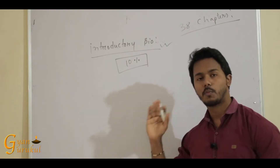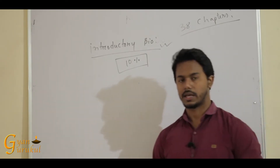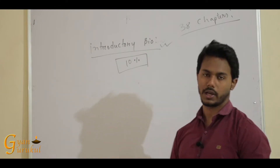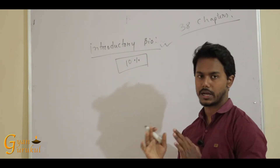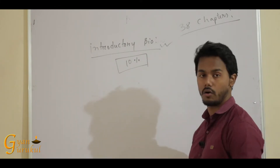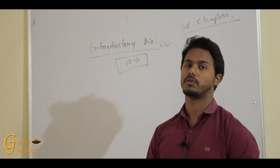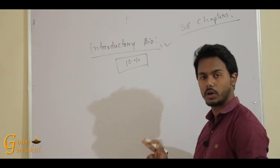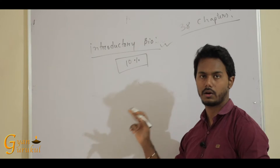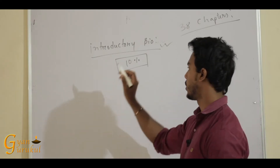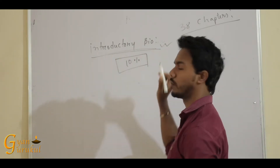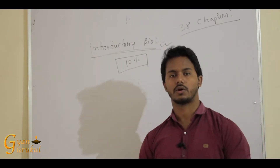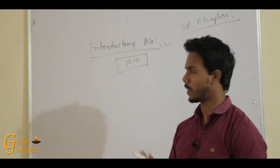This portion is quite lengthy, but it is a basic chapter. Living World, Biological Classification, Plant Kingdom, Animal Kingdom — the chapters are really long. However, the questions are really easy. You can follow up on introductory biology, go through the concepts thoroughly, and then you will get a good score.